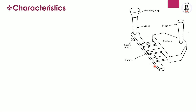The sprue base is connected with the runner. The runner connects with the different gating systems, which depend upon the size and shape of the castings or mold cavity. A multi-gating system can be used, connecting with the castings. At the end of the castings there is a riser, which ensures 100 percent filling of the mold cavity.